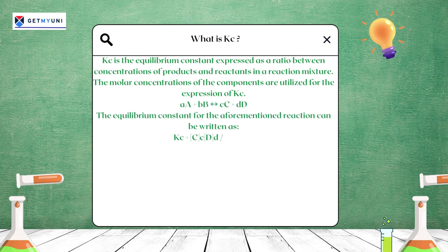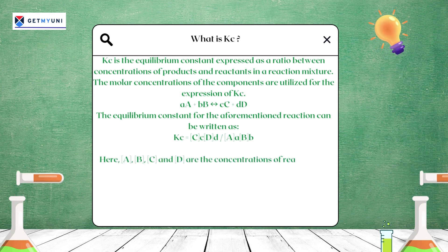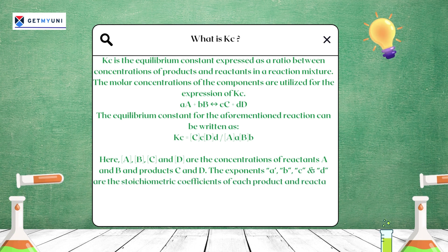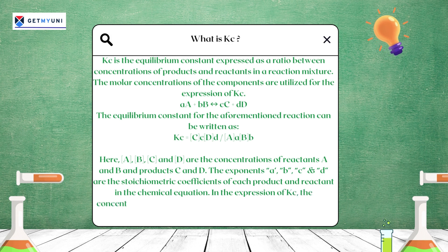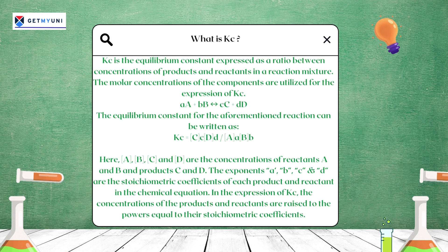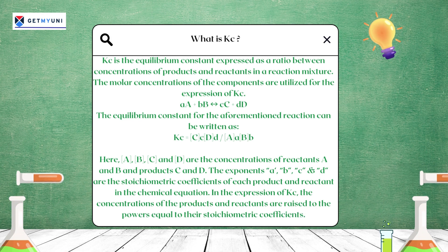In the Kc expression, A, B, C, and D are the concentrations of reactants A and B and products C and D. The exponents a, b, c, and d are the stoichiometric coefficients of each product and reactant in the chemical equation. The concentrations of the products and reactants are raised to the powers equal to their stoichiometric coefficients.